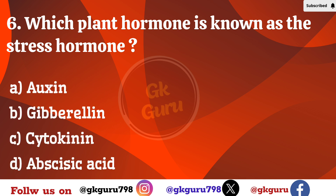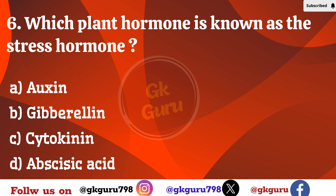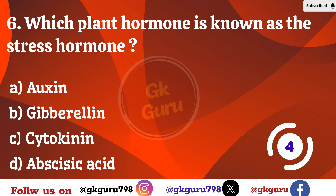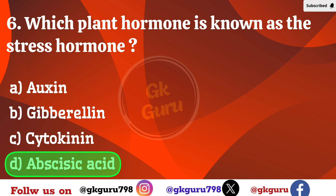Sixth question: Which plant hormone is known as the stress hormone? Option A: auxin. Option B: gibberellin. Option C: cytokinin. Option D: abscisic acid. Correct answer: Option D, abscisic acid.